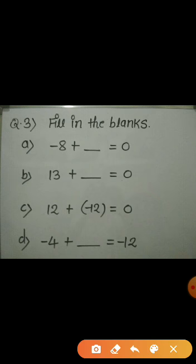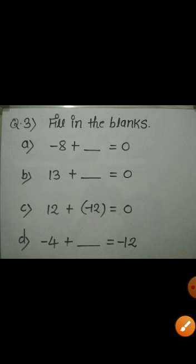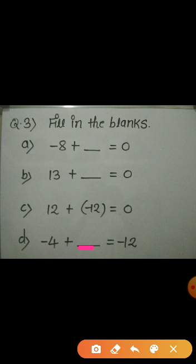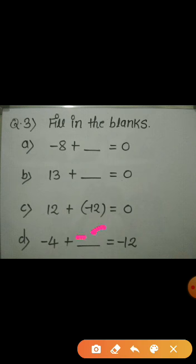Now come to the fourth fill-up. Minus 4 plus what is equal to minus 12? If you are unable to find the missing integer, here is a trick. Shift minus 4 to the right-hand side — when you shift it, it becomes plus 4. Now minus 12 plus 4 becomes minus 8. Hence the answer is minus 8. So minus 4 plus minus 8 is equal to minus 12. You can use this method everywhere.